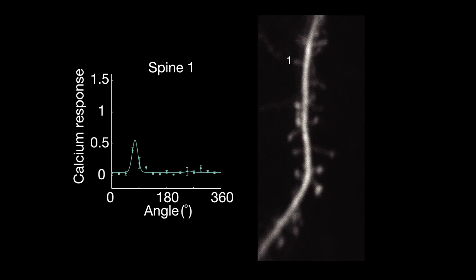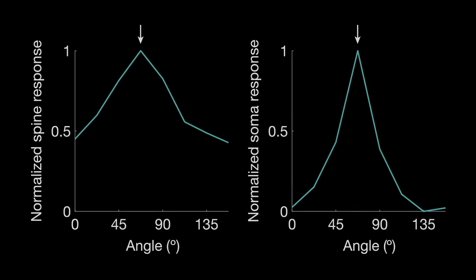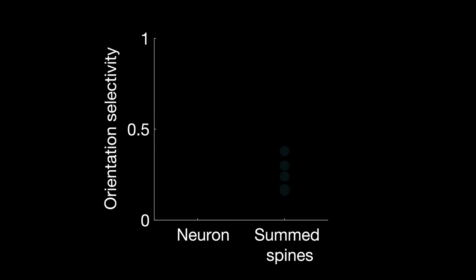Individual spines also preferred specific orientations, and the preferred orientation of all of a neuron's spines together reflected the neuron's overall preference. However, the selectivity of the inputs did not explain the selectivity of the neuron.